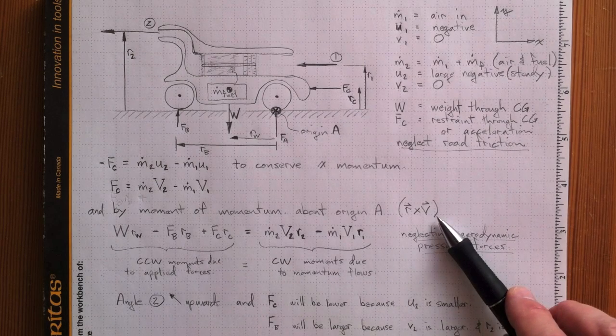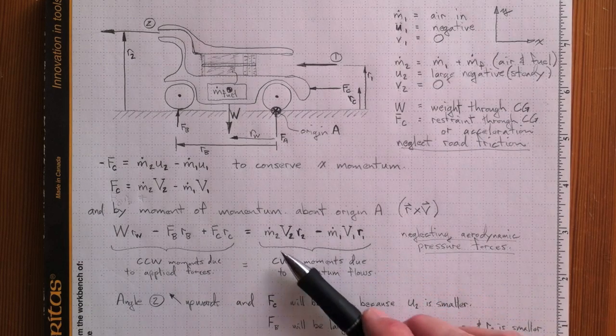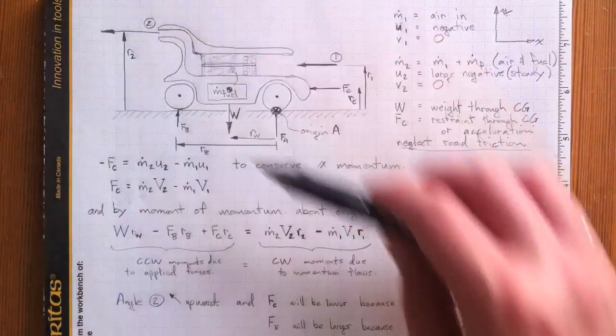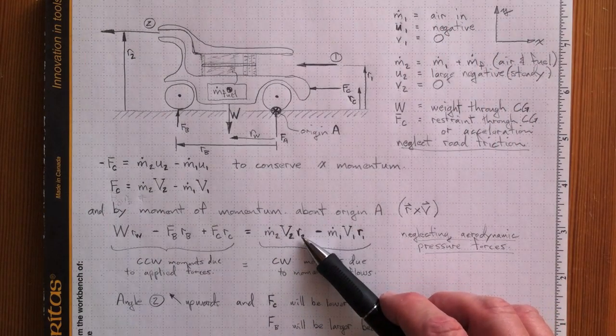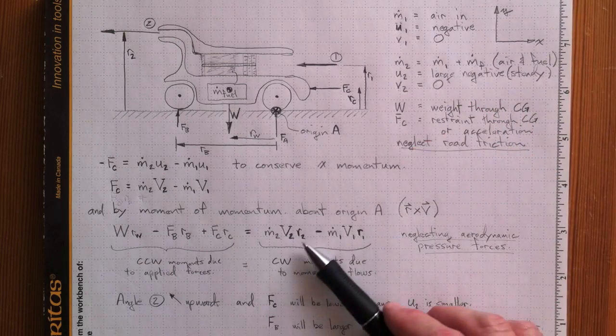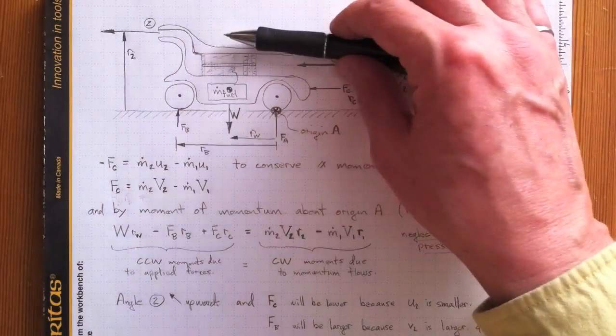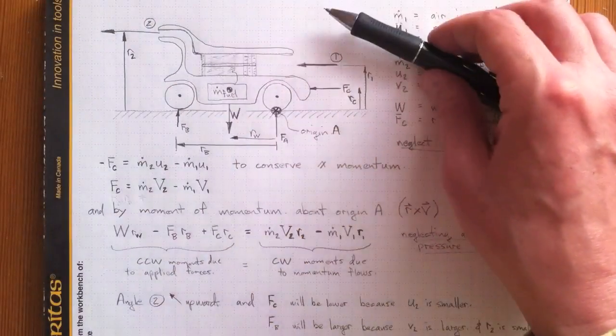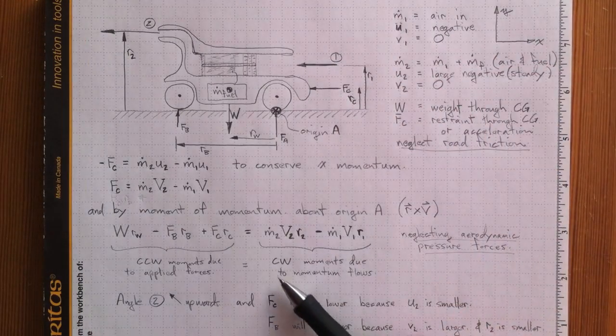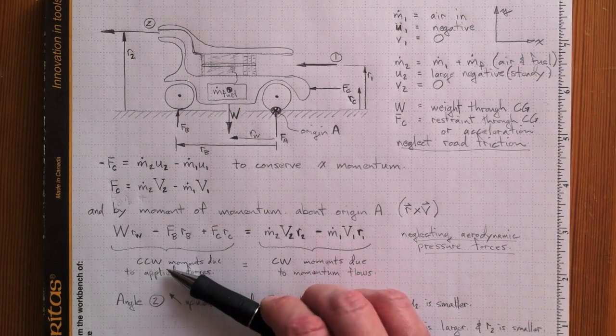Now when we do the R cross V momentum balance, moment of the momentum equation, we wind up with M dot 2 V2, that's the momentum going out here, times R2. Now if we did our cross products really carefully and got our directions correct, then we'd wind up knowing the right sign to put on this. But by examination we can see that if we're throwing stuff out that way, we're generating a clockwise moment on the car with that thrust. So these are the clockwise moments due to the momentum flows. And they have to be equal to the counter-clockwise moments due to the forces.